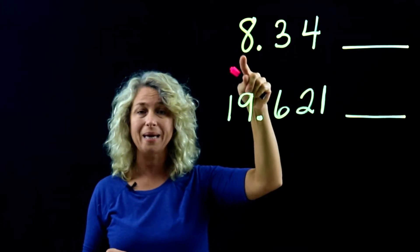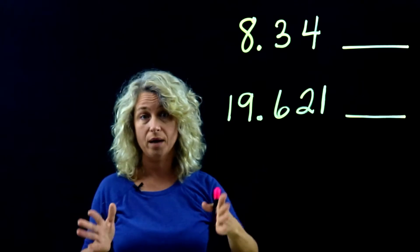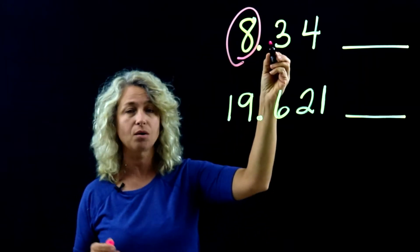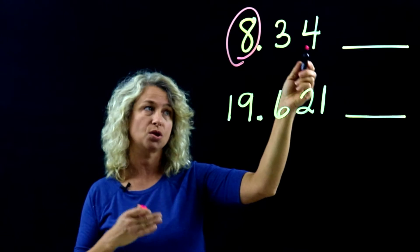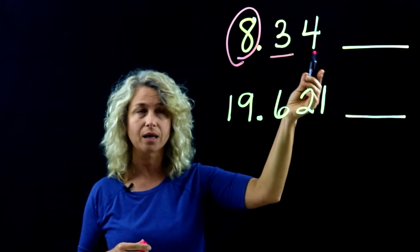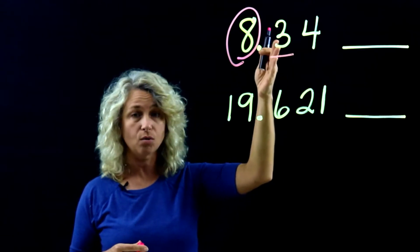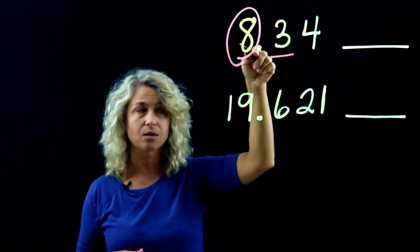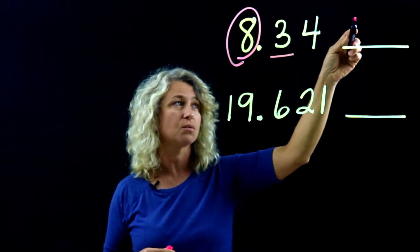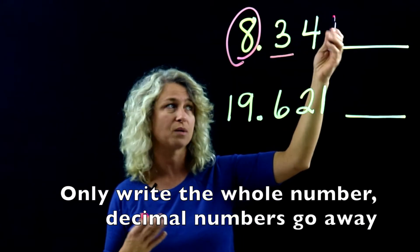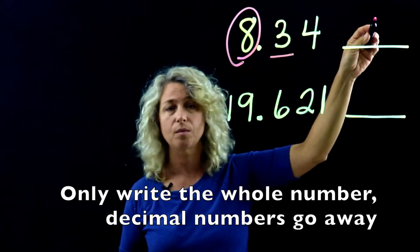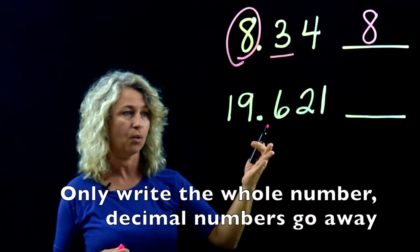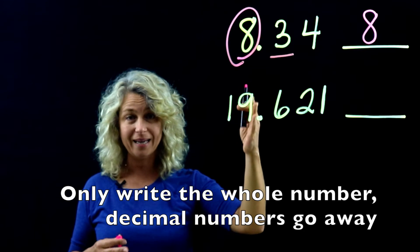Rounding to the nearest whole number means rounding to the ones place. We'll circle the 8 and underline the digit to the right — the 3. Since 3 is 0 to 4, the number stays the same, so 8 and 34 hundredths just rounds to the whole number 8.